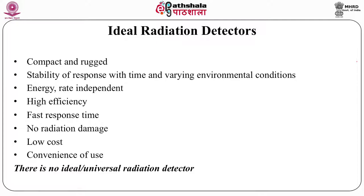The dose shown should be independent of the energy of the radiation. Similarly, its integral response should be independent of the dose rate. This ideal radiation detector should have high efficiency, fast response time, and should not itself suffer radiation damage, because over time the response of the detector would change. It should be low cost and convenient to use. But the bottom line is: there is no ideal universal radiation detector.